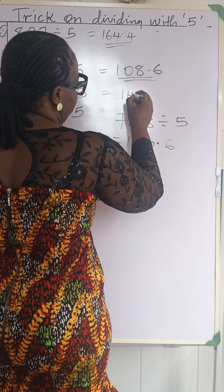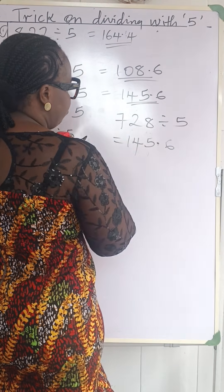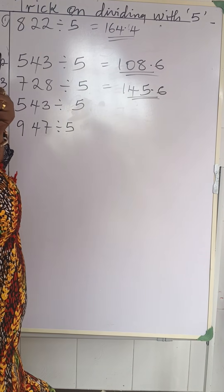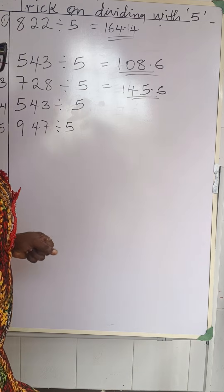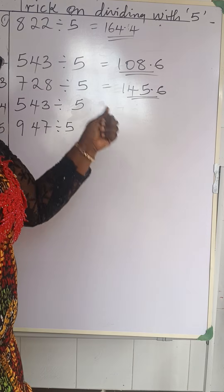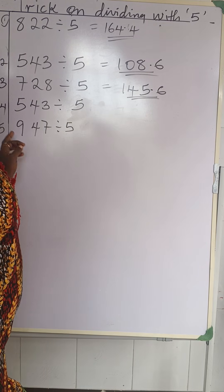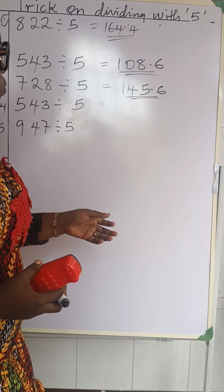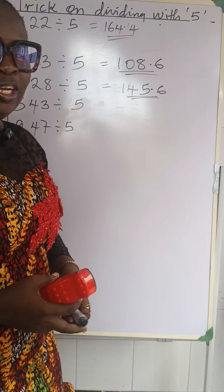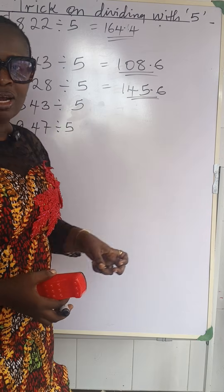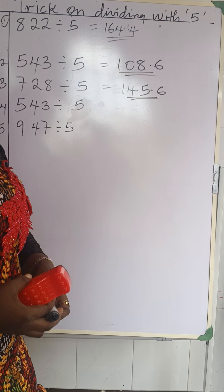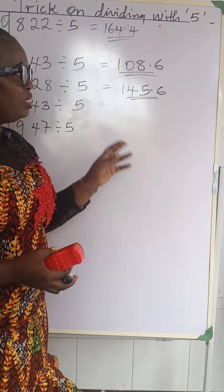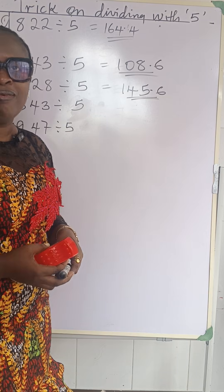That is the answer for number three. You can also use the longer method to verify. For number five, we have 947 divided by 5. We're teaching all this to help students in their examination classes — instead of using the longer route for an objective question where the answers are already written, you use the short route, get the answer fast, and move to the next one. You can beat the time. For essay questions, use the longer method. Thank you for staying with us today, bye.